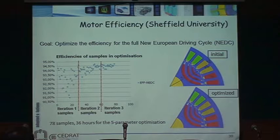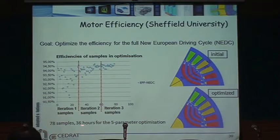You can see how in early iterations the samples are very spread out across the operating space, and as the optimization converges they cluster together, finally settling on a 94.5% efficiency. This is much better than the initial machine and works well across the full driving cycle. This took 36 hours for 5 parameters without distribution — today with distribution it would be much faster.